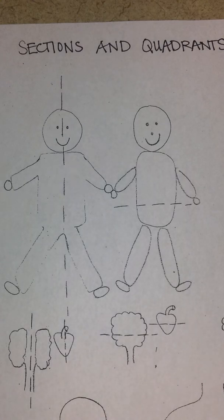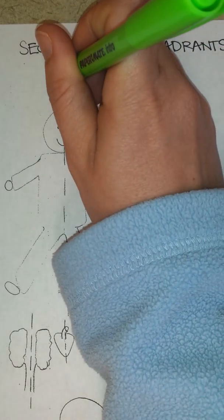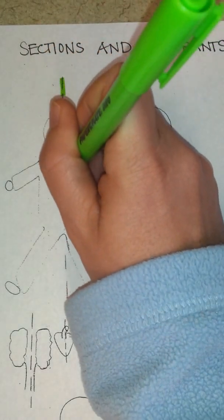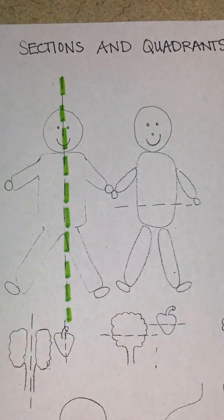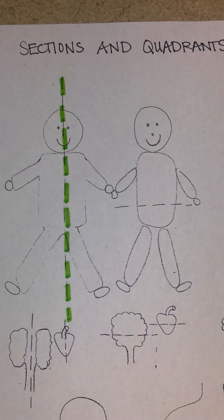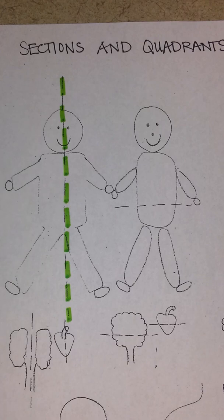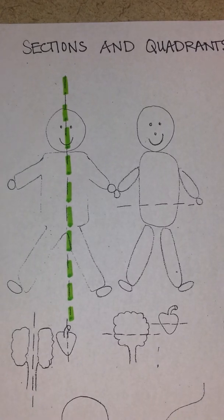When an MRI is done or you're looking at maybe a slice of something under the microscope, if it's divided into a left and right side, like this happy camper right here, we call it a sagittal section. I can always remember that because sagittal starts with an S and it divides it into a right and left side.